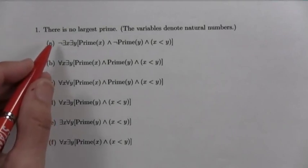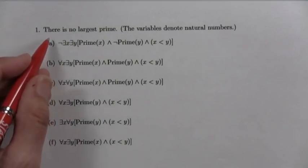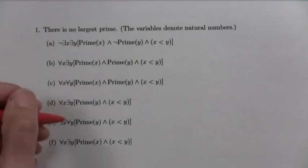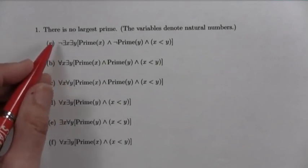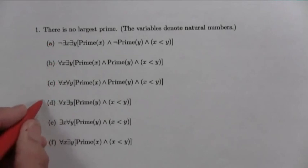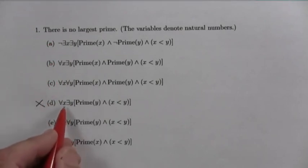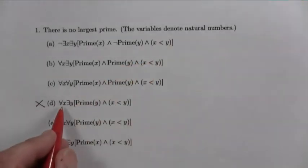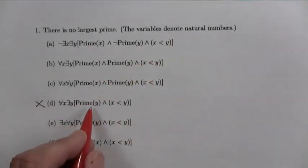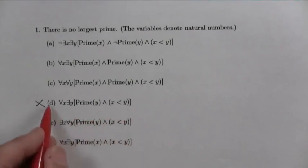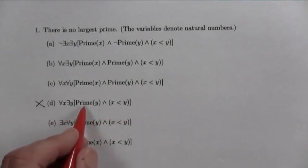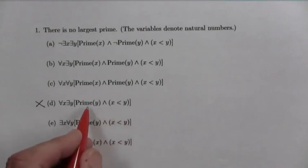Well, the first question on problem set 3 asked us to choose which one of these statements says that there is no largest prime. And if you look through them, you should come up with this one. That simply says for all x, and the variables denote natural numbers, for all x there is a y which is prime and bigger than x. So given any x, you can find a number y which is bigger than that x and it's prime.